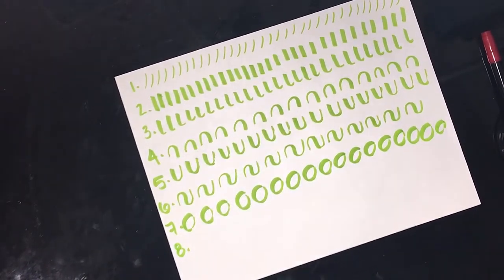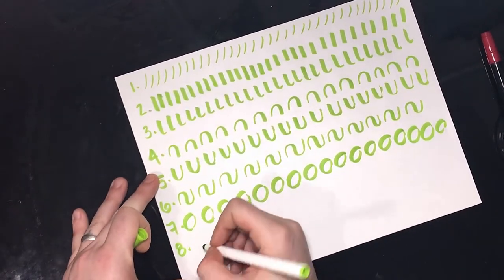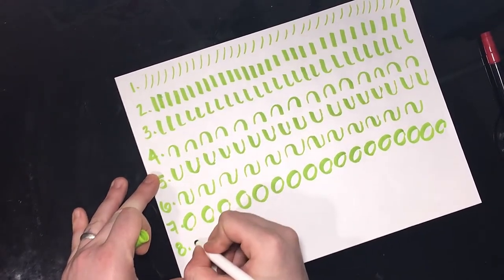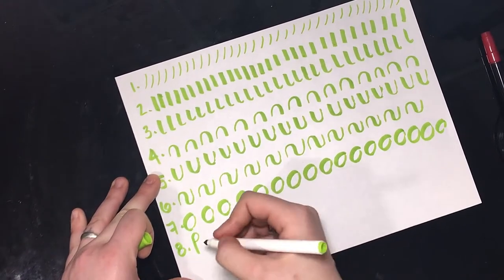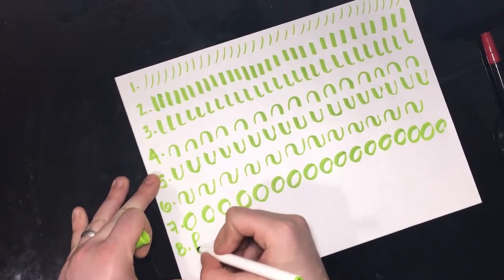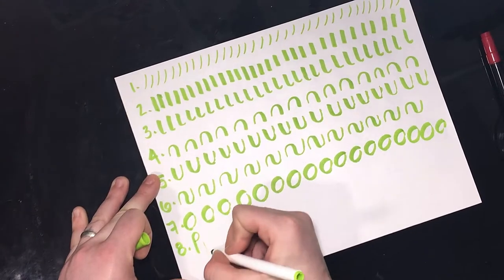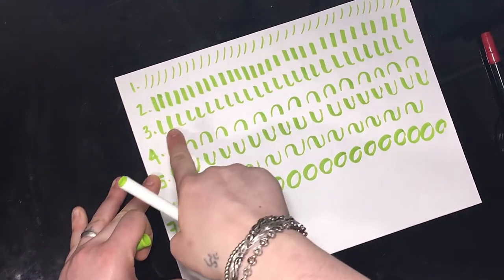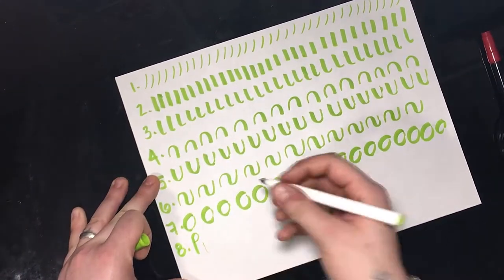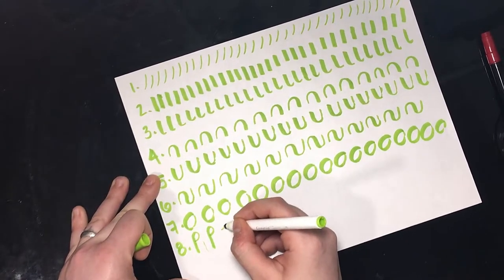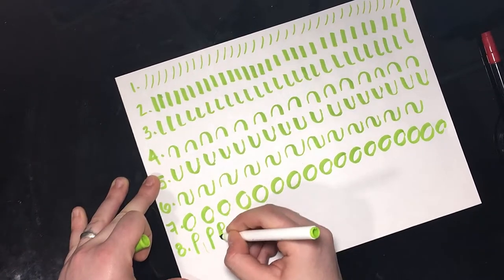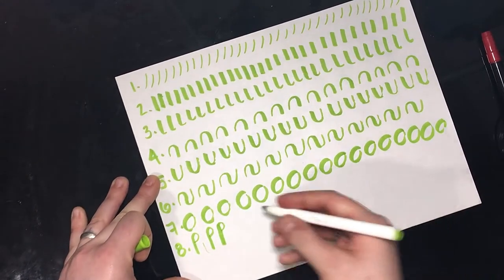Now the next thing we're going to do is the- it looks like a P, but this is what you would use when you draw your H's. So if you were to draw an H, you would go back over and then continue with one of these to make your H. So you have your thin little curly Q and then your thick down stroke.